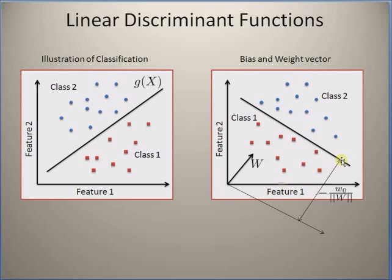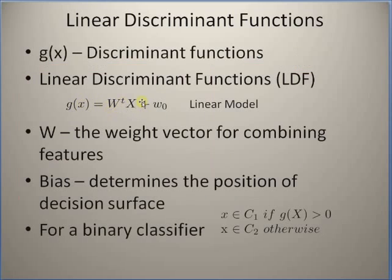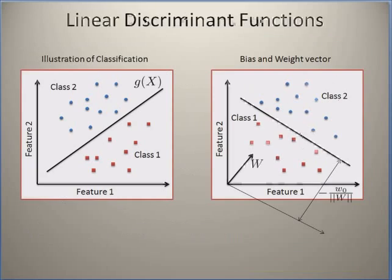The bias basically determines the distance between the origin and the discriminant function. This can be determined by equating w-transpose x plus w-naught equal to 0 and calculating the distance, defined as w-transpose x divided by the norm of w. Hence the distance equals w-naught divided by the norm of w — this is the perpendicular distance between the decision function and the origin.